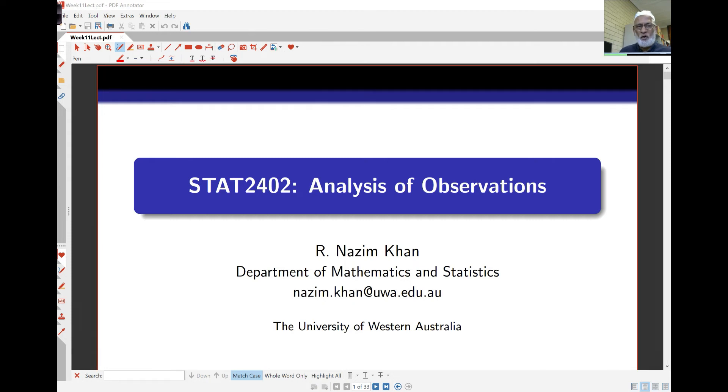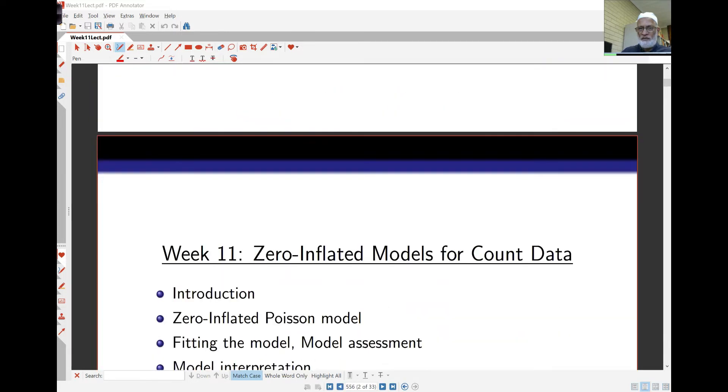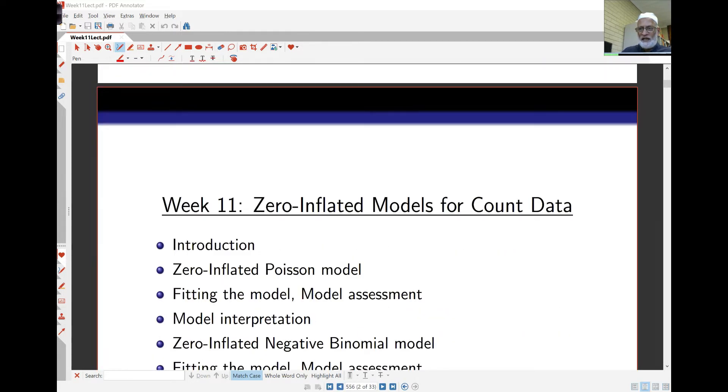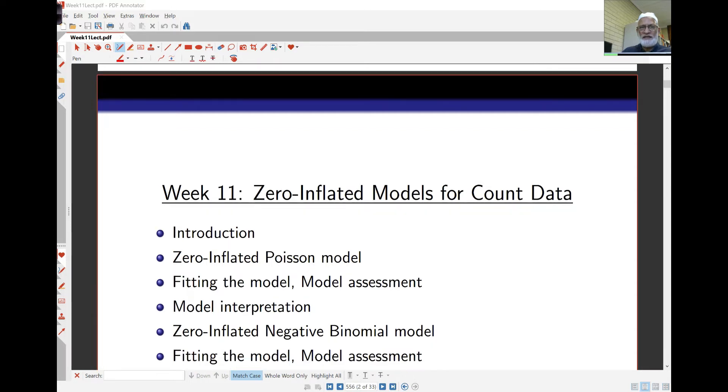Hello again. This is now week 11 of lectures, and this week we'll extend the Poisson model that we saw in the last two weeks. In week 9 we saw the Poisson model for count data. In week 10 we looked at the quasi-Poisson and negative binomial models to extend the Poisson when the dispersion wasn't equal to 1, so either under-dispersed or over-dispersed data.